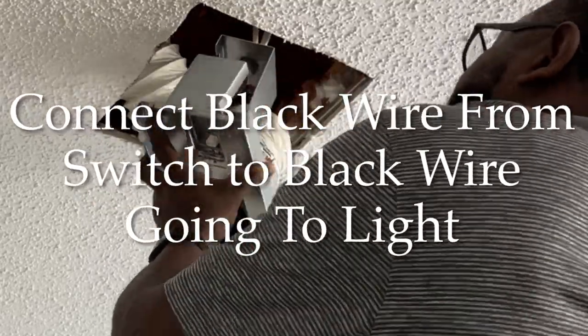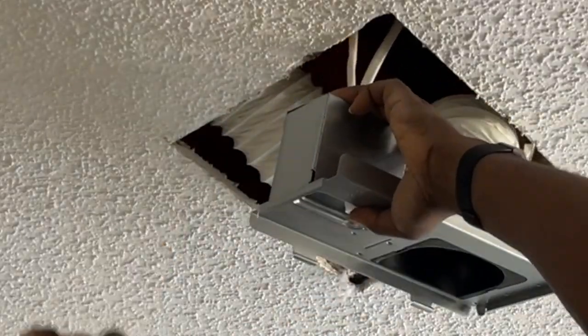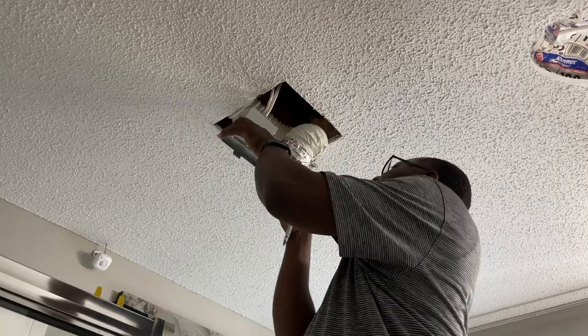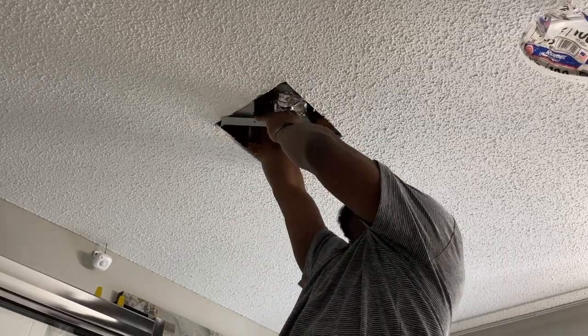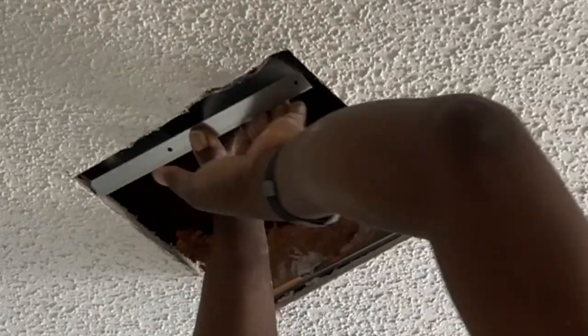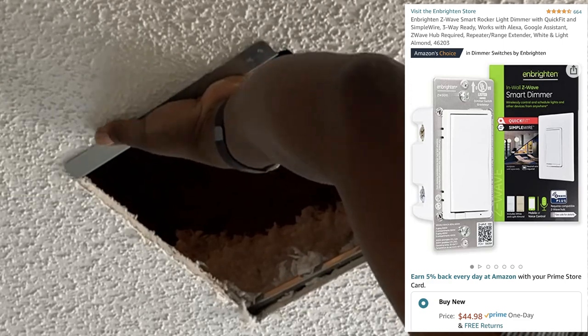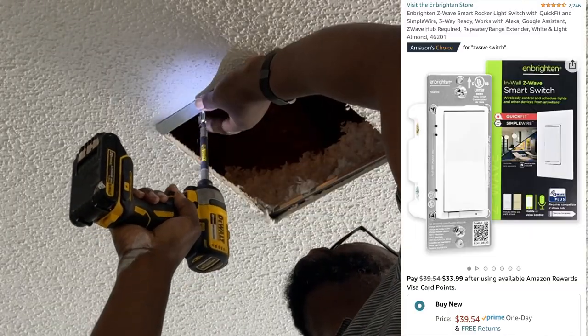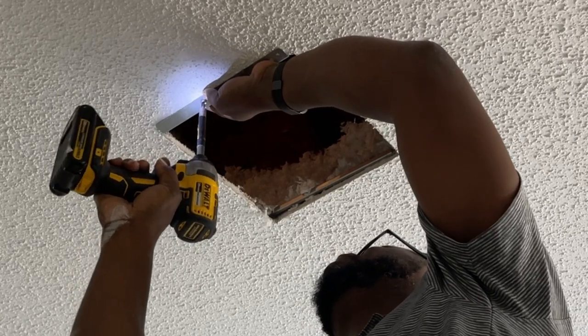I would just pigtail the black wires inside of the exhaust fan electrical box and carry that on and off signal to the light. I know that sounded like a lot but it's really not. My switches are actually smart, so my light is on a smart dimmer and my exhaust fan is on a smart switch, and I'll get more into that a little later on into the video.